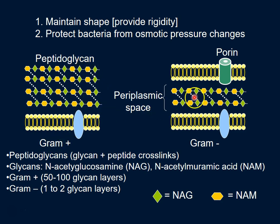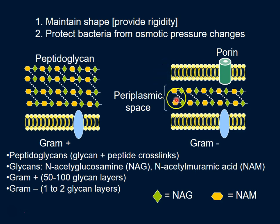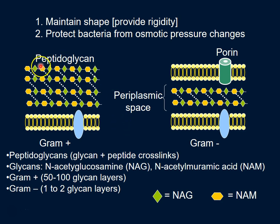In gram-negative, the cell wall is much thinner, but that's compensated by having an extra outer lipid layer made up of LPS. In gram-negative, the cell wall is confined within what's known as the periplasmic space, which is the space between the two lipid layers.